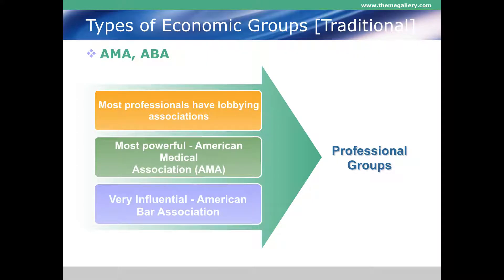Professional groups round out the economic category. Most professionals have some sort of lobbying association — doctors, nurses, attorneys. The most powerful is the AMA, the American Medical Association, developed by doctors. Also very influential is the American Bar Association. Because they are highly paid professionals, these organizations are able to spend quite a bit of money in Washington.